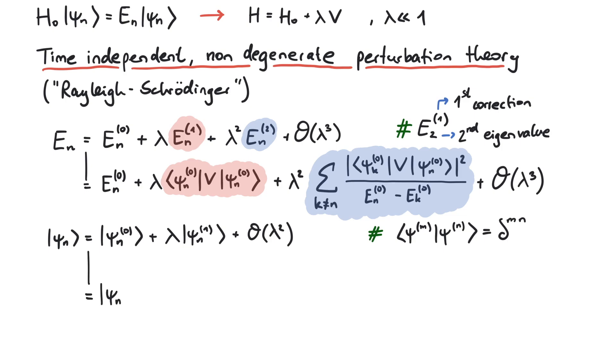For the first correction to the nth eigenfunction, we do a similar calculation like for the second order energy correction, however without the absolute square, and afterwards we multiply this number with the kth eigenfunction. That's usually it for Rayleigh-Schrodinger perturbation theory.